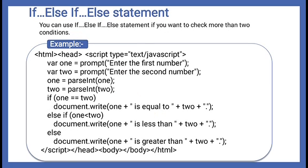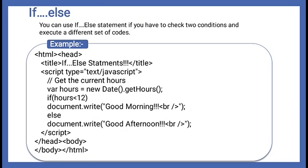For more than one condition, we use `else if`. Here we take two numbers from the user — first number and second number. There is a type casting line — we will discuss this when we cover objects later. If the condition that both numbers are equal is true, that line executes. If not, we go to the else part, which has another `if` — if that condition is true, it executes; otherwise we go to the final else. So one of three outcomes: equal, less, or greater.